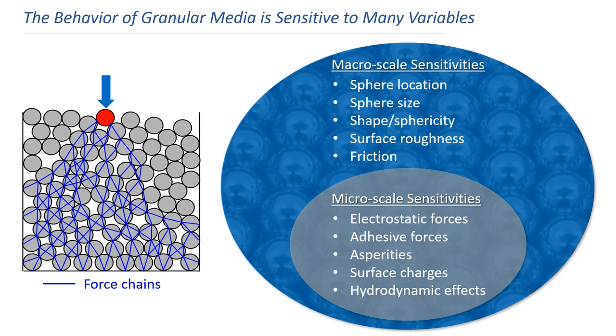Fabricating granular media so that it achieves desired behaviors is difficult at any scale. Even when the spheres within the media are macro-sized, their stress wave propagation behaviors are highly sensitive to the location, size, sphericity, surface roughness, and friction properties of its constituent spheres. You could imagine, if even one sphere in the image were in a slightly different location, or it was slightly larger or smaller than intended, there would be unwanted pockets of stress build up, or undesired gaps between the spheres, which would dramatically change the nature of the force change shown.